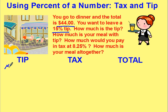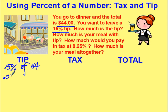Set it up as a regular math problem: 15% of $44. Change your percent to a decimal by moving your decimal back two places. So 15% becomes 0.15. Change your 'of' to times: 0.15 times 44.